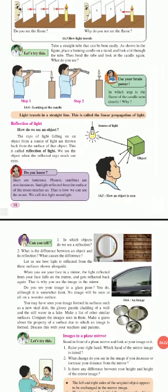After that, we will see reflection of light. What is meant by reflection of light? The rays of light falling on an object from a source of light are thrown back from the surface of that object. This is called reflection of light. This is how we see an object.